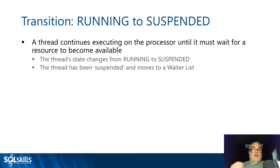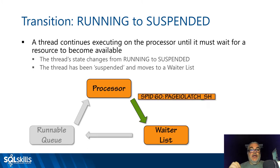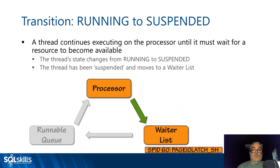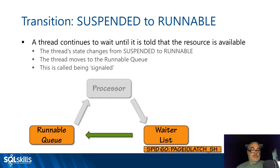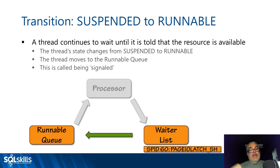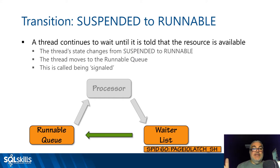Going from running to suspended: a thread is executing code and comes across a resource it can't get, so it gets suspended. This is called a context switch — it goes off the processor onto the waiter list and waits until told its resource is available. Going from suspended to runnable: some other thread marks our SPID as runnable — this process is called being signaled. It could be done by a thread on this scheduler or a completely different scheduler releasing the resource.